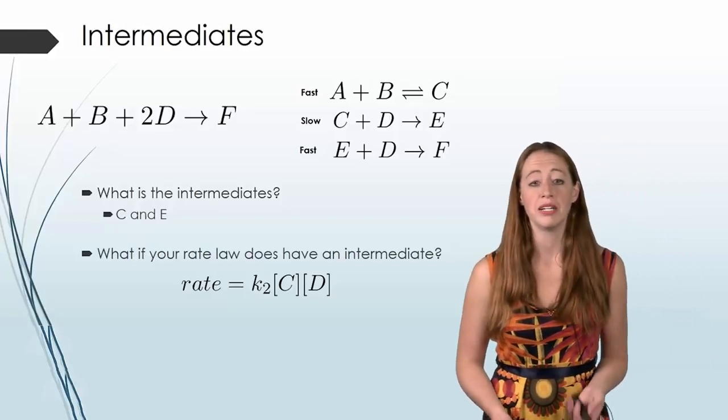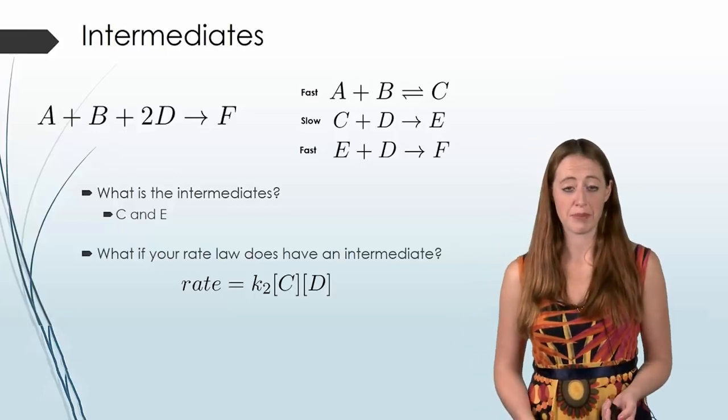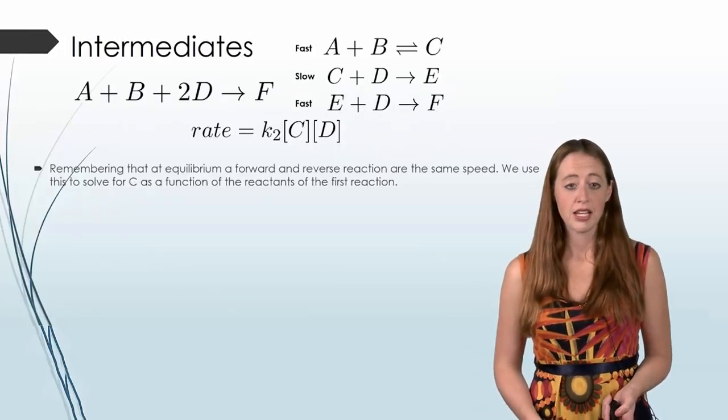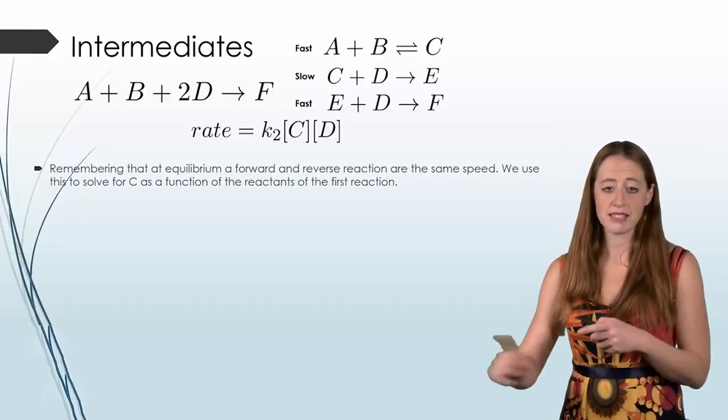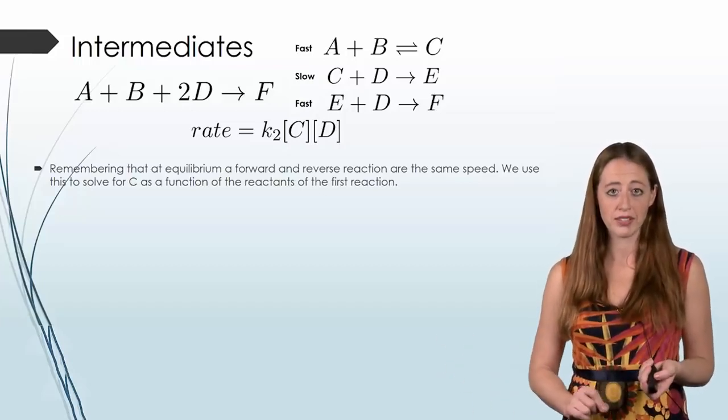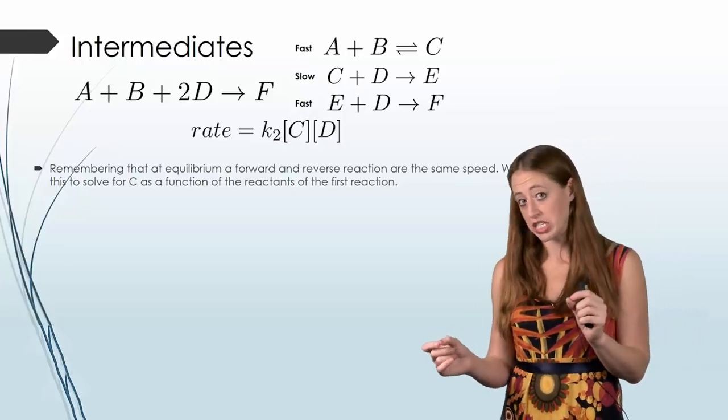So here's what we can do, given the way that the first step is written. Let's think back to our definition of equilibrium. It means that something is going back and forth, back and forth, and that the reactants and the products aren't changing.